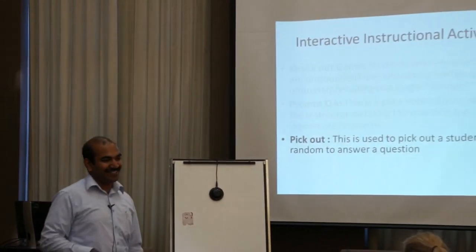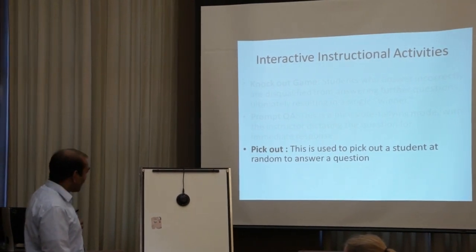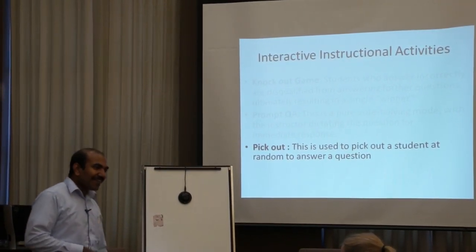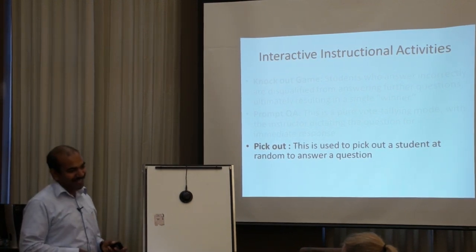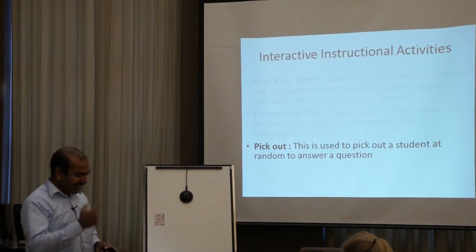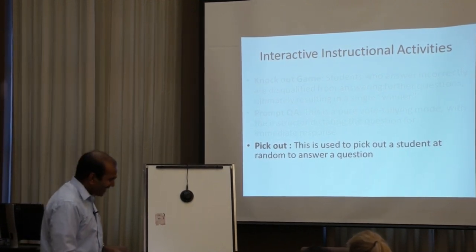Then pick-out — for example, if you have 50 students in your classroom and you want to randomly select one student, you just click one button and it will randomly assign a clicker number. For example, if it selects 27, whoever has remote key 27 has to answer that question. The machine will randomly select that student.